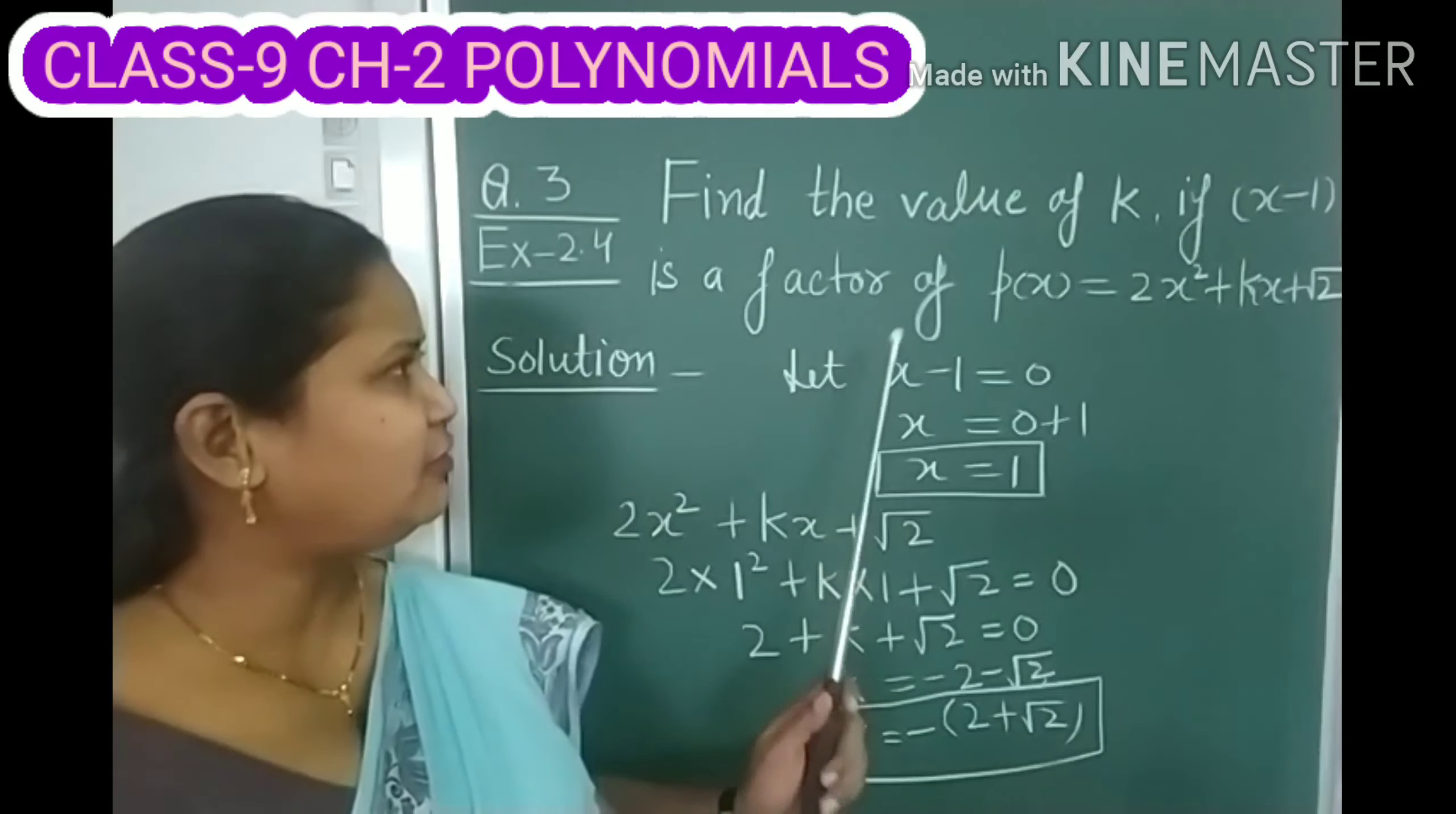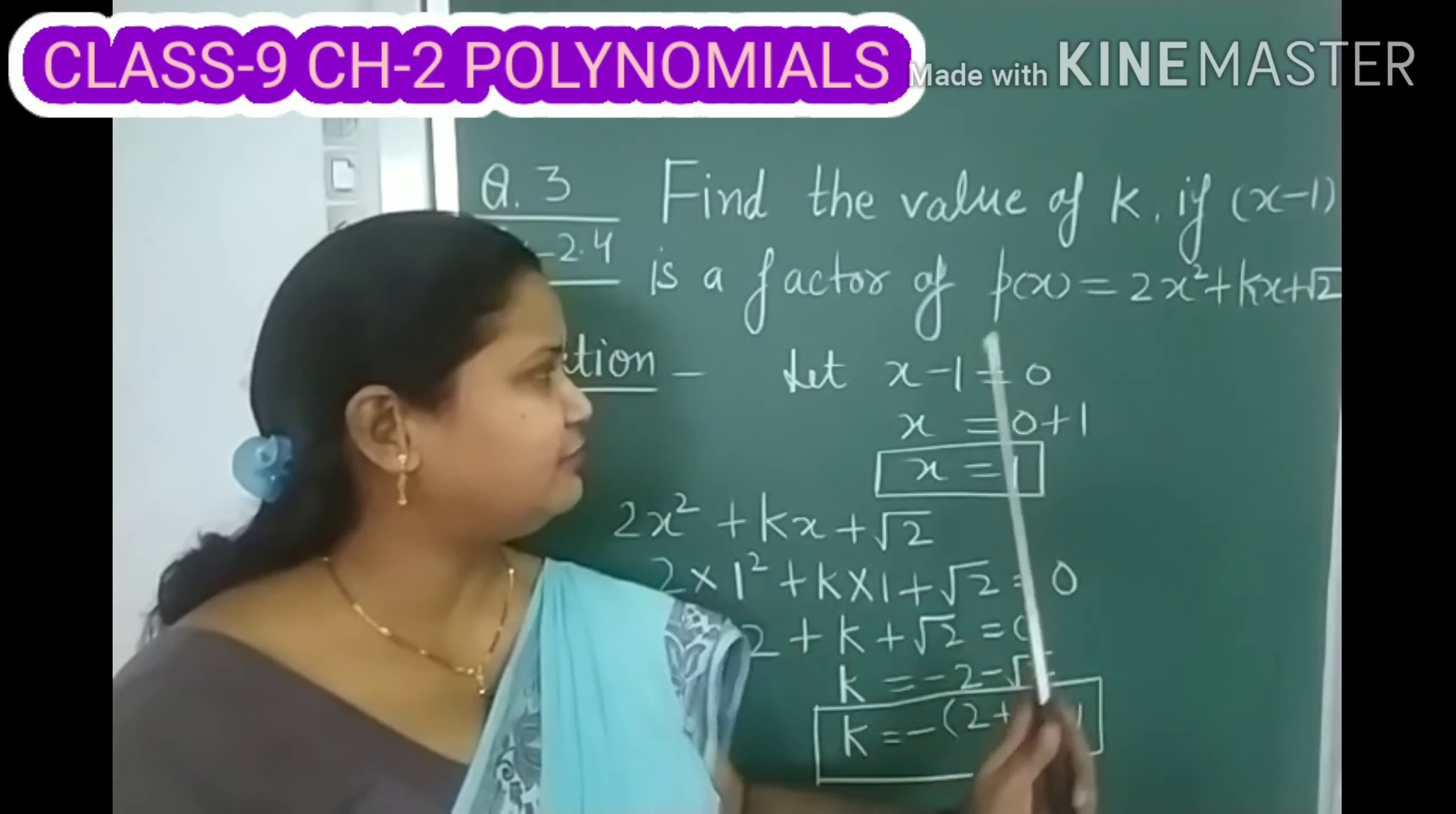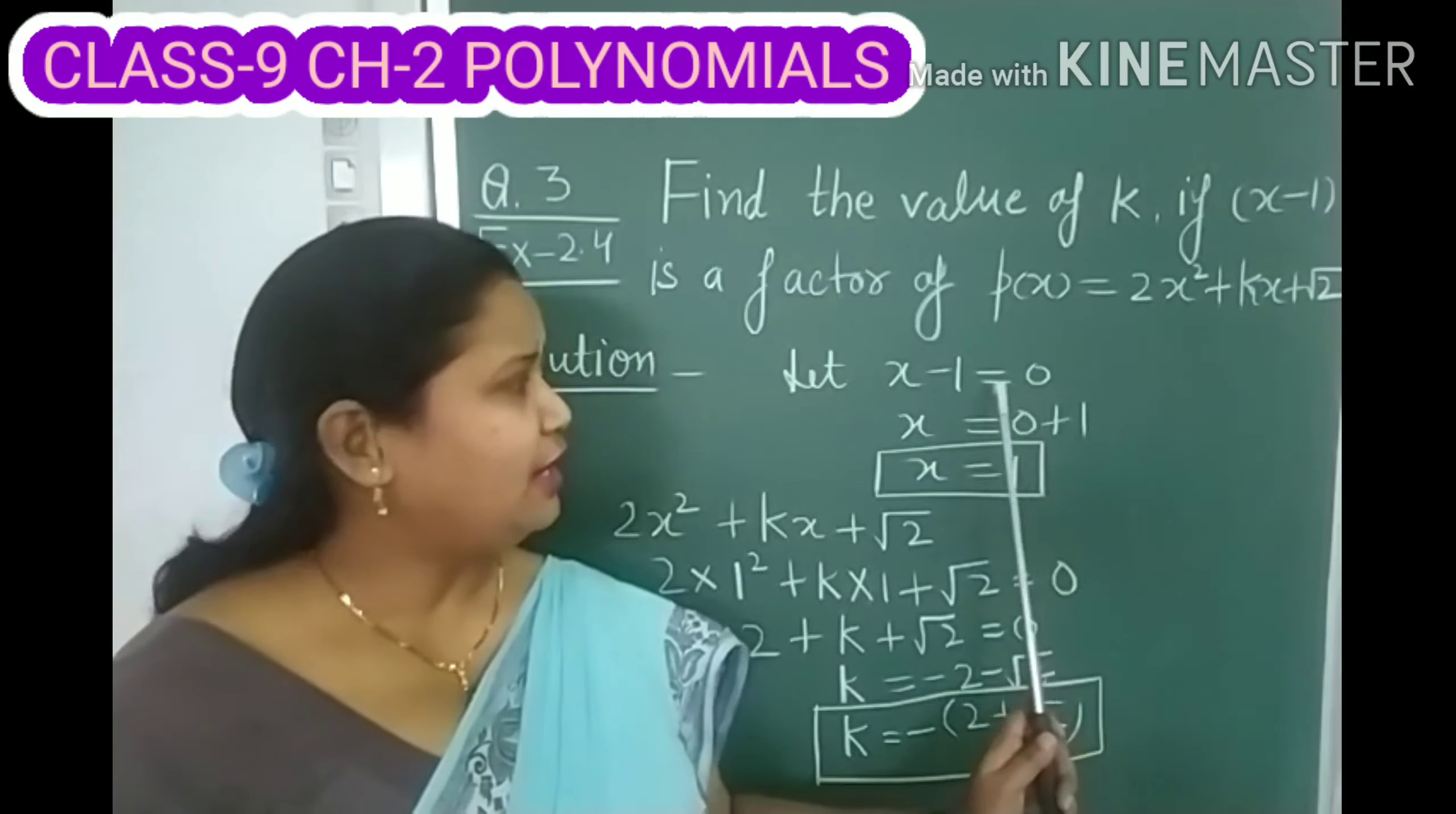Children, first of all, what we will do? We will keep this linear polynomial which we are given equal to 0. So, X minus 1 equals to 0. Now, we are to find the value of X from this equation.